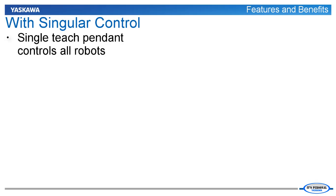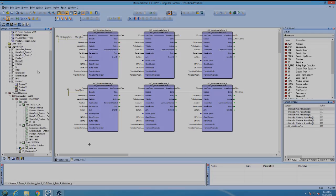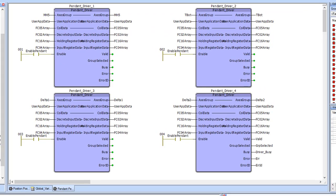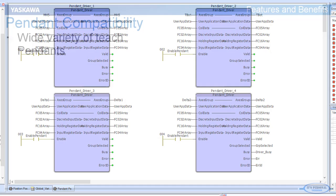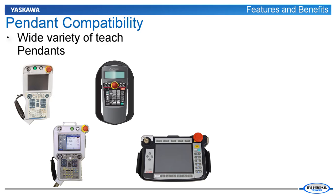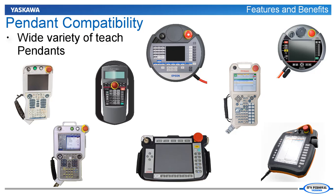With singular control, the pendant interface is connected to the MPIEC controller, not the robot. This allows the pendant to interface with different robots without being directly connected to them, so the machine operator is only required to know how to operate one pendant. The pendant interface is used by adding a teach pendant driver for each of the robots in the MotionWorks IEC project. Singular control also allows any pendant that communicates via Modbus TCP to potentially be used as the singular control pendant, as long as the screens are created to communicate with the teach pendant driver.